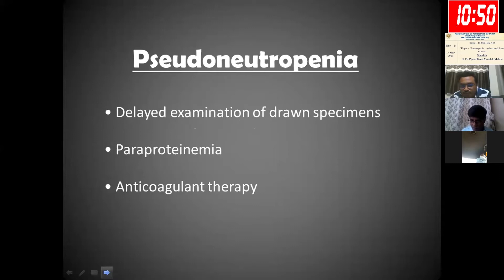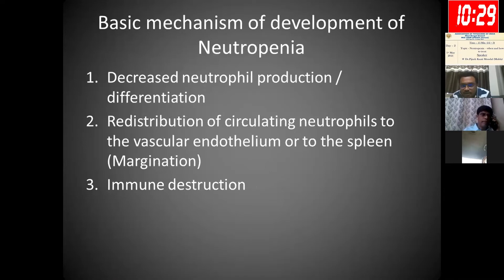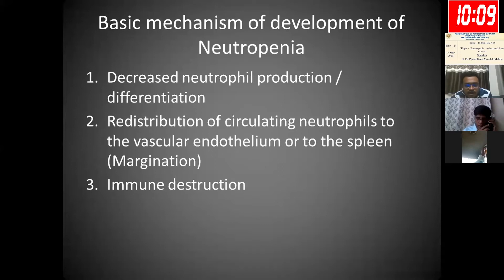Another term is pseudoneutropenia — when we draw a sample and keep it for long, it sometimes shows neutrophil count below normal. Paraproteinemia and anticoagulant therapy may also present with pseudoneutropenia. The three basic mechanisms of neutropenia development are: decreased neutrophil production and differentiation, redistribution of circulating neutrophils to the vascular endothelium or spleen during endothelial insult, and immune destruction.